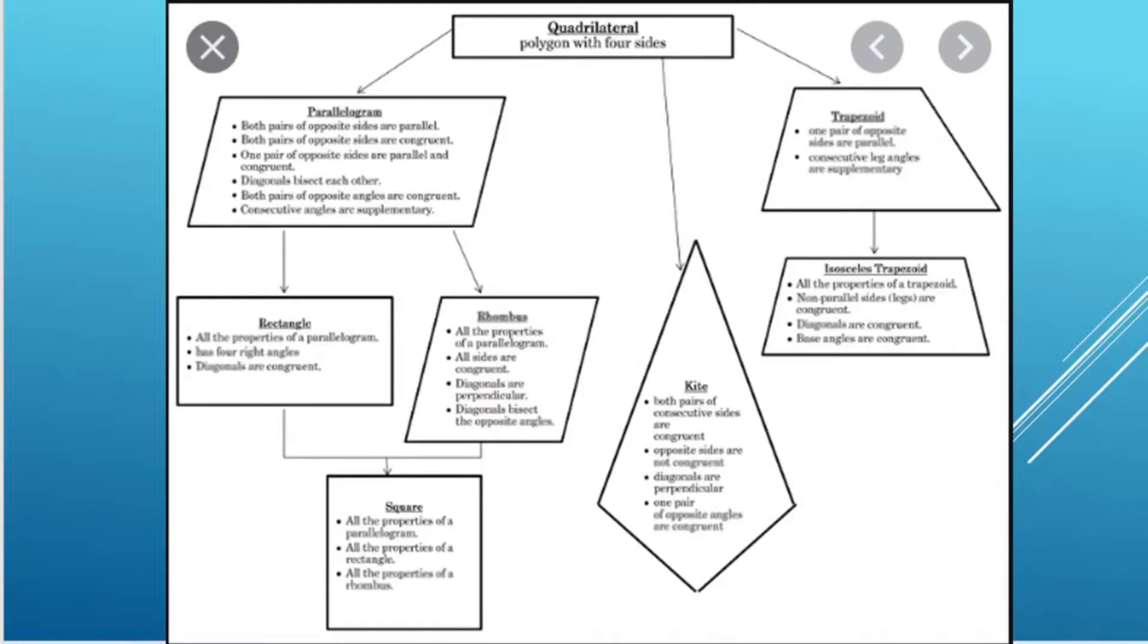You then have a square, which is going to have two sets of parallel lines, four right angles, and four equivalent sides. We then also can have a trapezoid. A trapezoid is a four-sided quadrilateral that has only one set of parallel lines.